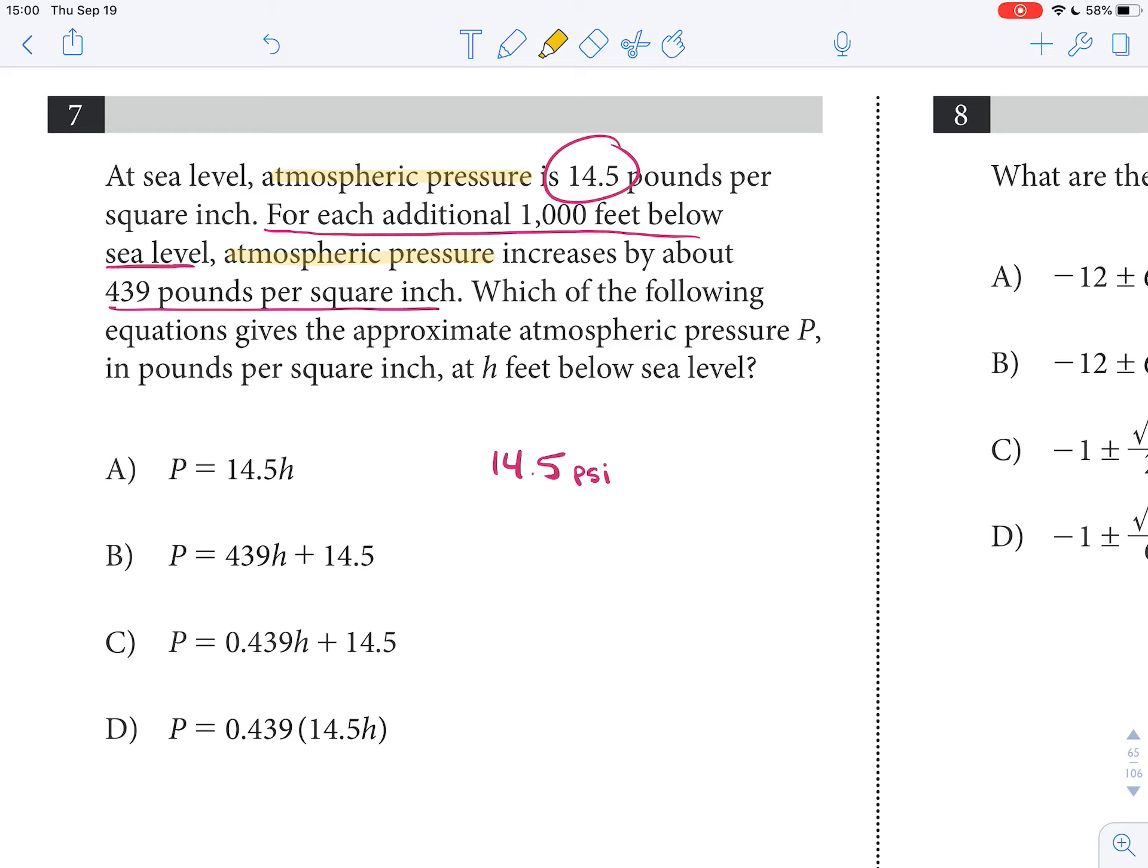So, which of the following equations gives the approximate atmospheric pressure P in pounds per square inch at H feet below sea level?